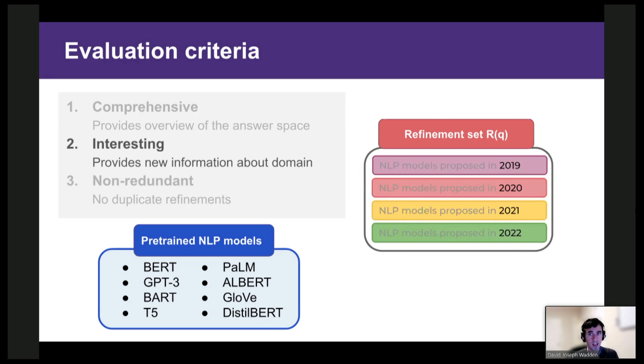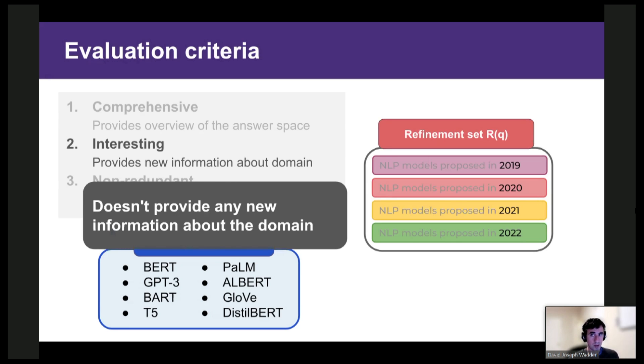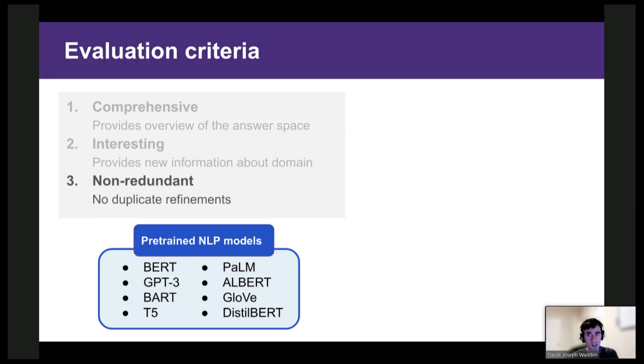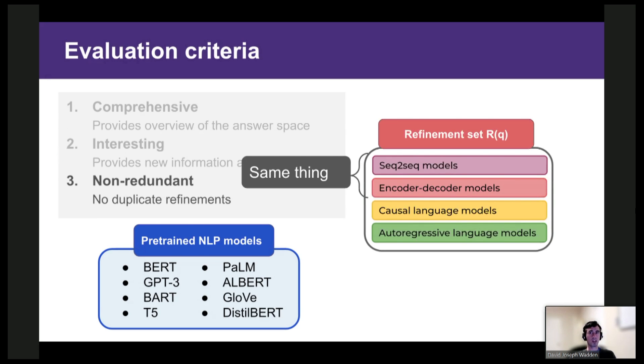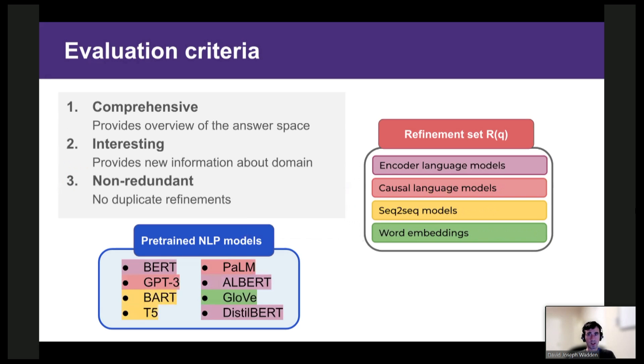Next, here's a refinement set that lists NLP models by year. So this doesn't identify any important properties unique to NLP models, so it's not very interesting. In this example, seq-to-seq models and encoder-decoder models are largely redundant, and similarly for causal language models and autoregressive models. Finally, here's our original example refinement set. This is comprehensive because it covers four common types of pre-trained NLP models. It's interesting because it organizes the answer space based on key modeling characteristics, and it's non-redundant. So this is the kind of thing we're hoping to do.